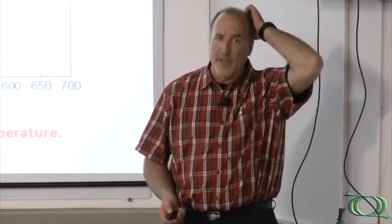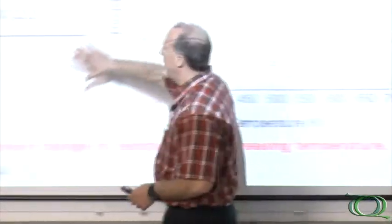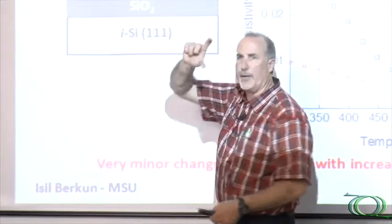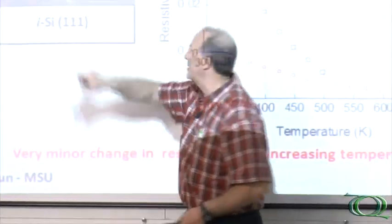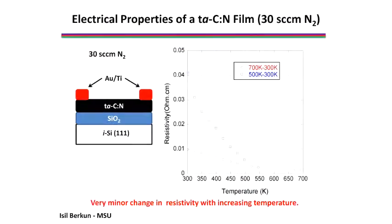If you do what are called Hall effect measurements to look at how many carriers you have and the mobility of these carriers, it helps us understand the electrical properties. In this measurement we'll take an insulating silicon substrate, put on SiO2 insulating layer of silicon dioxide, the conducting film and two metal contacts. Here showing again the resistivity as a function of temperature. The blue dots are the very first measurement, you can see there's a small change, not very much, 0.04 to 0.01 ohm centimeters with temperature. Then we do a second one, that's the red dots.